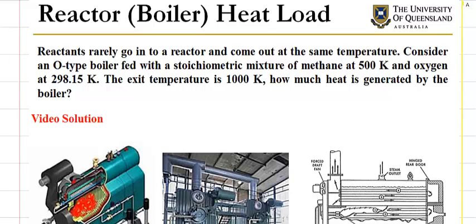Hello, this video is about the reactor or boiler heat load problem in the notes. We're looking at a boiler having methane and oxygen fed to it, perhaps at an oxyfuel natural gas plant. It's being combusted and the mixture of combustion products, carbon dioxide and water, are leaving at 1000 degrees Kelvin. We want to know how much heat is being generated by this boiler.